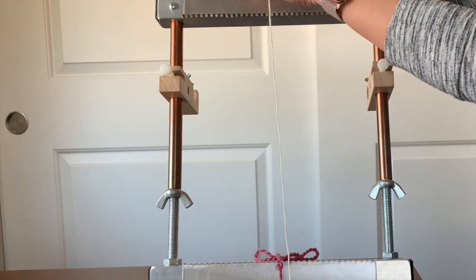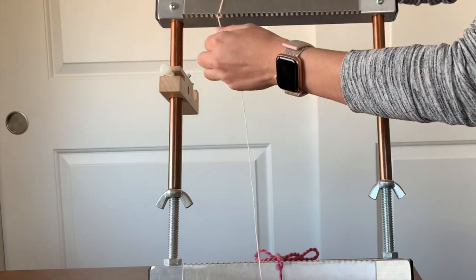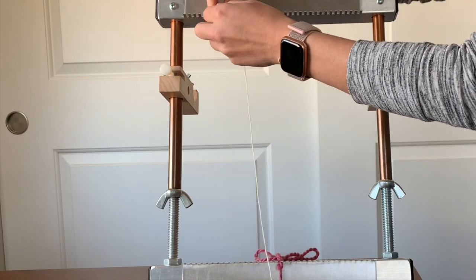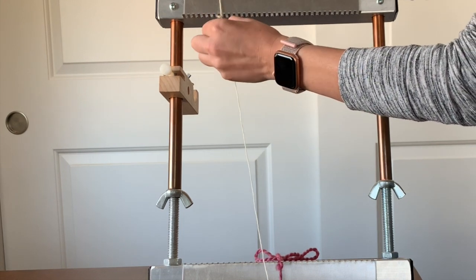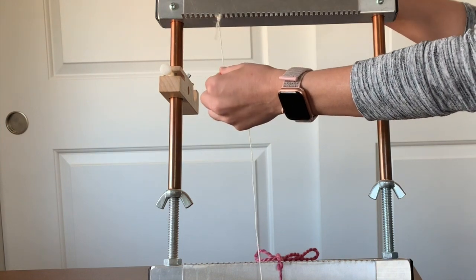This can be on the top or on the bottom of your loom. Once you've done that you need to start warping.